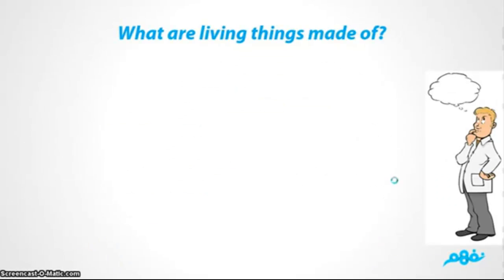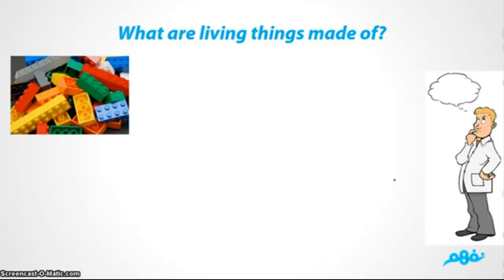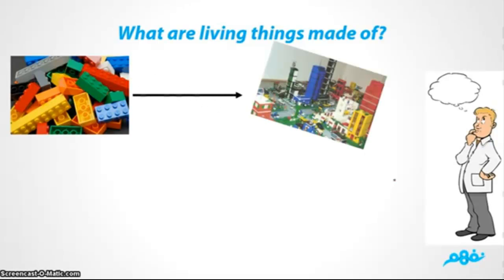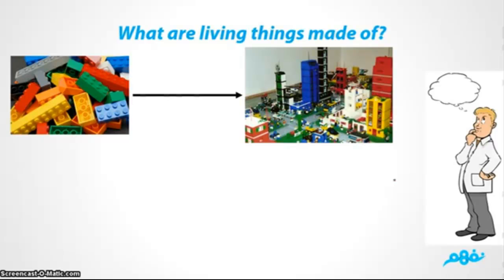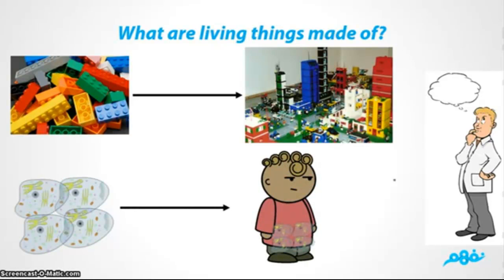What are living things made of? When we were kids we used to play with Legos — those small pieces could be used to make a whole city. We can think of cells in the same way: they are very small tiny units that we cannot see with our own eyes, but all together they join up to make up living organisms.